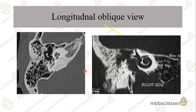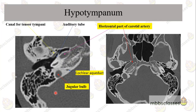Sometimes we need to read the cochlear anatomy, especially for cochlear implantation, to know whether the turns of the cochlea are normal in shape and size. In that case, we may ask the radiologist for a longitudinal oblique view. This longitudinal oblique view shows the cochlear shape, which appears like a snail shape. As we move further down, we will be at the level of the hypotympanum.